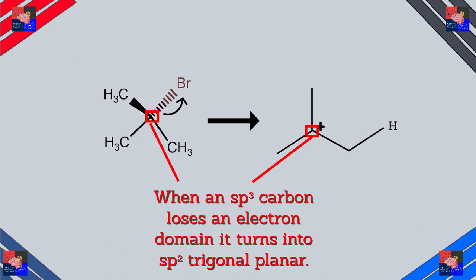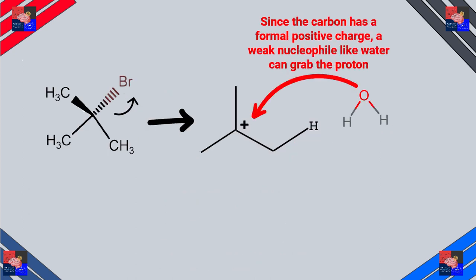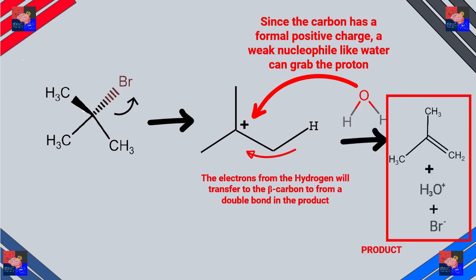Now the molecule is flat. Since it has a formal positive charge, a very weak nucleophile like water can go ahead and take that proton. Meanwhile, the electrons from the hydrogen atom go and form a double bond on the product, and the water taking the extra proton turns into a hydronium ion. The bromide is already gone, and the product has a double bond in it.